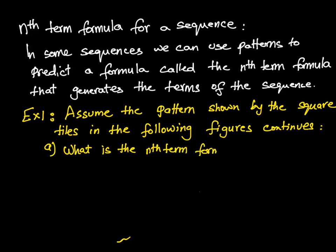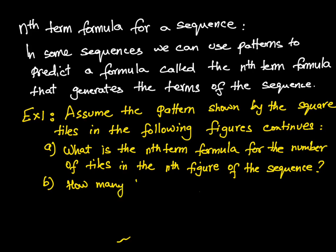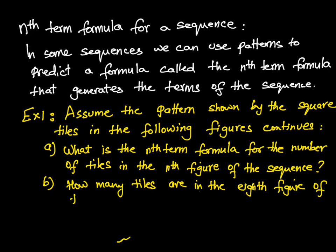The first question is: what is the nth term formula for the sequence? The nth term is basically for the number of tiles in the nth figure — so how many tiles will it have. The second thing is to find out a specific number: how many tiles are going to be there in the 8th figure? We need to find a number of tiles without actually drawing the tiles.